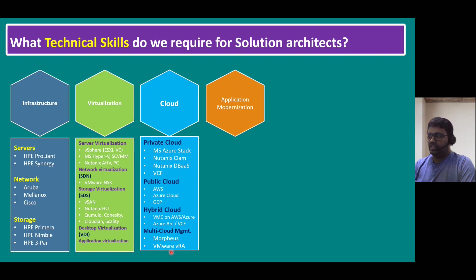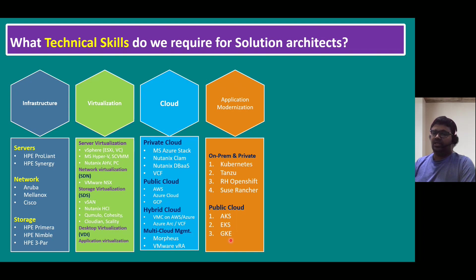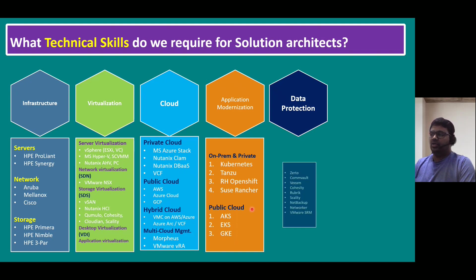For application modernization, on-premises and private level we can use open-source Kubernetes, but some customers prefer enterprise-grade Kubernetes platforms such as VMware vSphere with Tanzu, VCF on Tanzu, Red Hat OpenShift, or SUSE Rancher. From a public cloud perspective, for Azure we have AKS (Azure Kubernetes Service), for AWS we have EKS (Elastic Kubernetes Service), and for Google we have GKE (Google Kubernetes Engine).